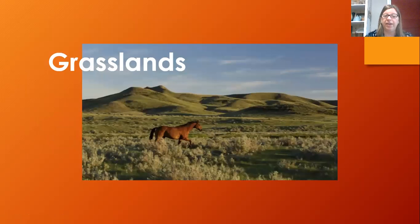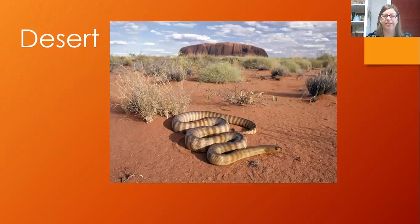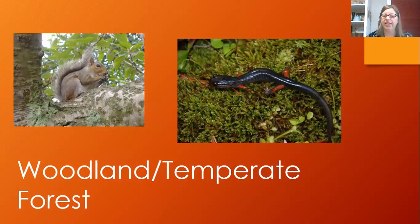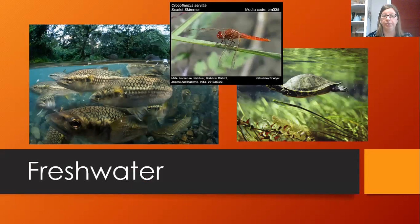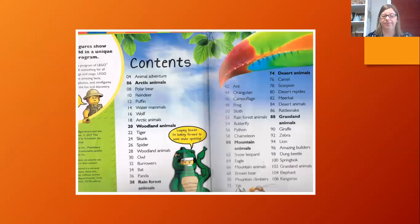Grasslands are one of the kinds of habitat found in the world. Let's see how many habitats there are in the world: grasslands, polar and arctic, desert, mountain, woodland, temperate forest, freshwater, ocean, rainforest, and forest.